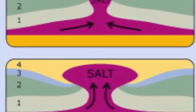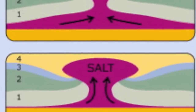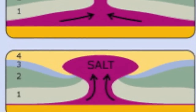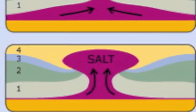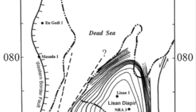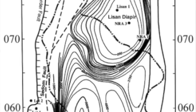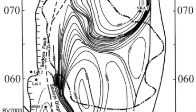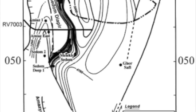This picture shows a good representation of the formation of a diapir. There are two main diapirs in the Dead Sea — they are the Lisan and Sedom diapirs. You can observe their location in this picture.